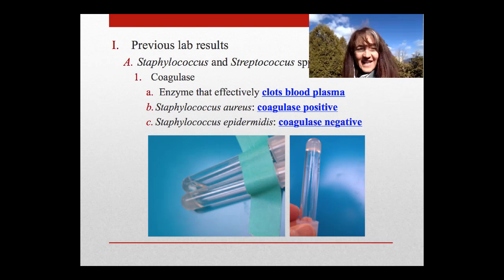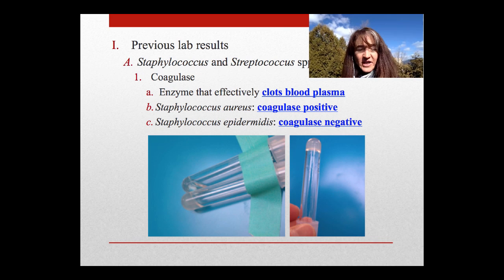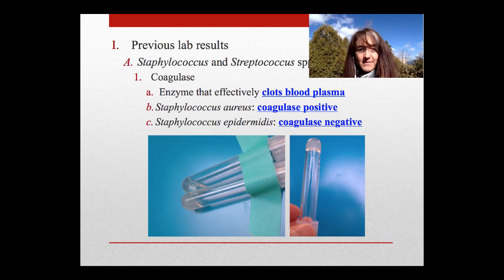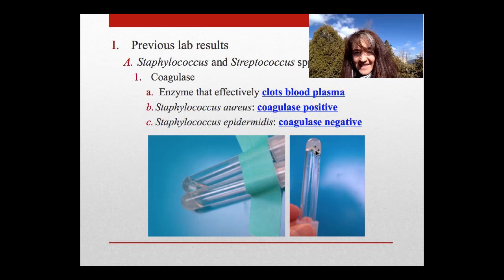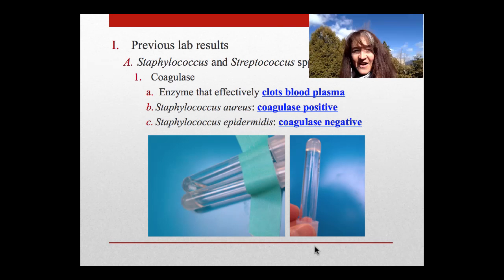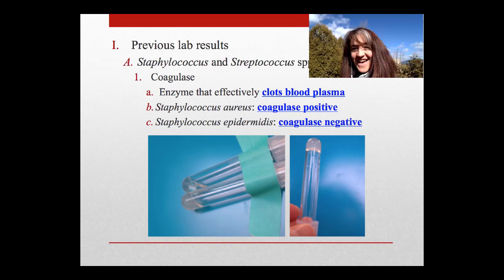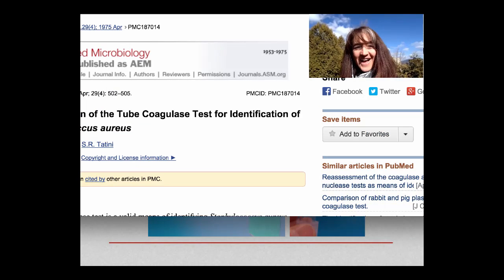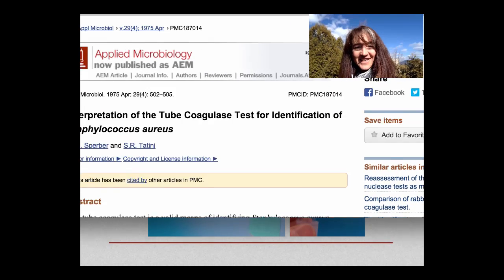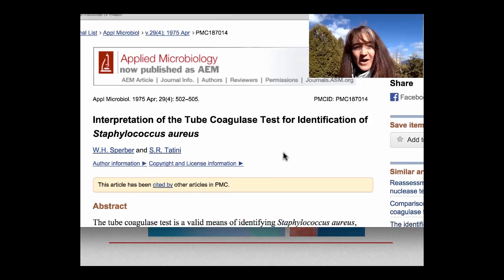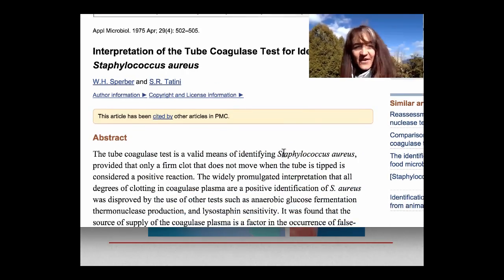The coagulase test is what clots blood plasma, turning fibrinogen into fibrin, making the blood plasma stick in the bottom of the tube. Here are two pictures where you can see that if you turn the tube all the way upside down, Staphylococcus aureus will stay in the bottom of that tube. I have an interesting article from Applied Microbiology about interpretation of coagulase tubes for identification of Staphylococcus aureus.